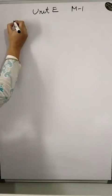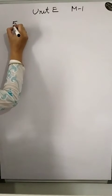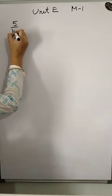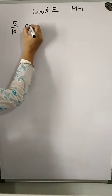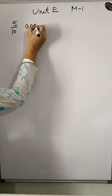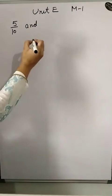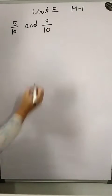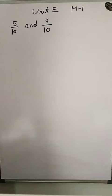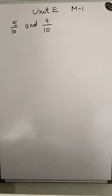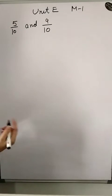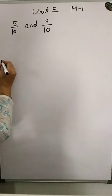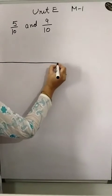The question is to compare 5 upon 10 and 9 upon 10 on the number line. So first you draw a number line.